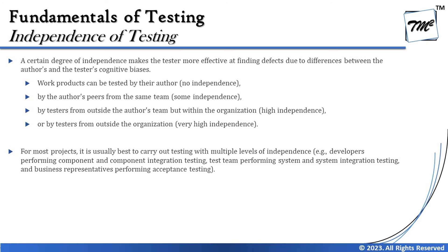The more independent the testing, the better for finding defects — but organizations need not choose just one degree. For most projects, it is best to carry out testing at multiple levels of independence. For example: developers performing component and component integration testing, a test team performing system and system integration testing, and business representatives performing acceptance testing — blending all four degrees simultaneously.